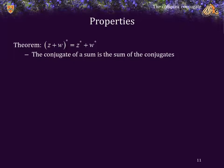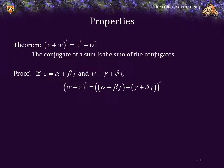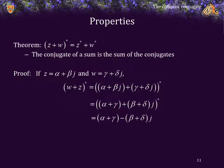Theorem: z plus w, all starred, equals z star plus w star — that is, the conjugate of a sum is the sum of the conjugates. Proof: If z equals alpha plus beta j and w equals gamma plus delta j, then w plus z all starred is that sum starred. Adding the two complex numbers by combining real and imaginary components, we take the complex conjugate by negating the imaginary component. Expanding gives alpha minus beta j and gamma minus delta j, which is just z star plus w star.